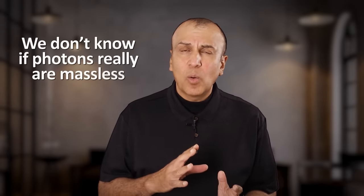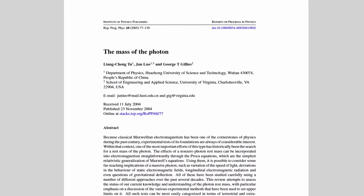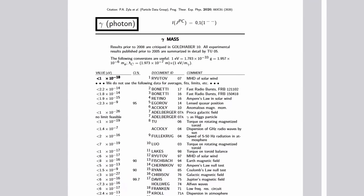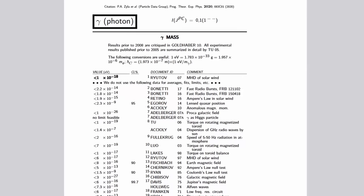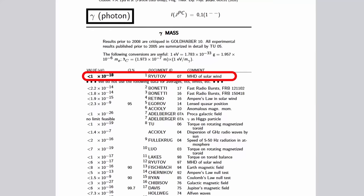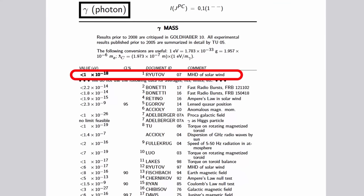The problem is that we actually don't know if photons really are massless. Why is this the case? Well, to this day, we have not been able to devise an experiment to truly test this. Experiments on earth tell us the mass of photons, if it has mass, can't be larger than 10 to the negative 18 electron volts, because we would have been able to detect that mass.